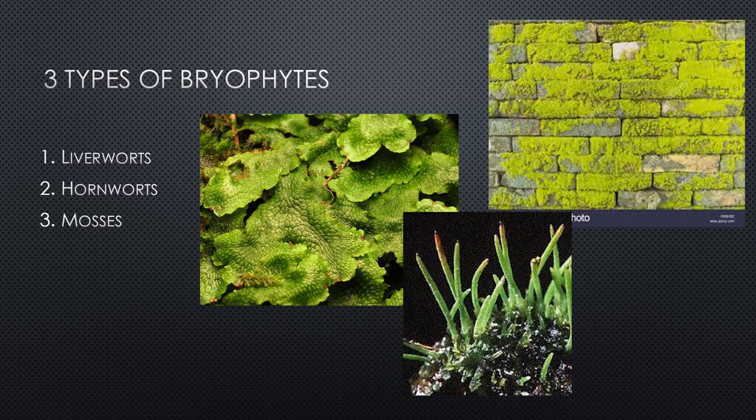There are three types of bryophytes: liverworts, hornworts, and mosses, all laid out on your classification chart. Let's take a quick look at each one.